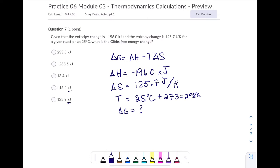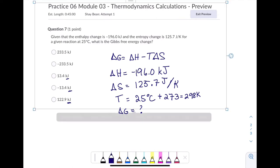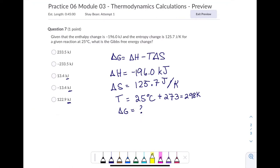As we look at the multiple choice answers, we'll notice these are all in kilojoules, which means I'm probably going to want to go and change this guy to kilojoules, which you remember from Chem 1. To change from joules to kilojoules, multiply by the ratio where the joules will cancel, and I'll be left with kilojoules. There are 1,000 joules in one kilojoule. So this is 0.1257 kilojoules per Kelvin.